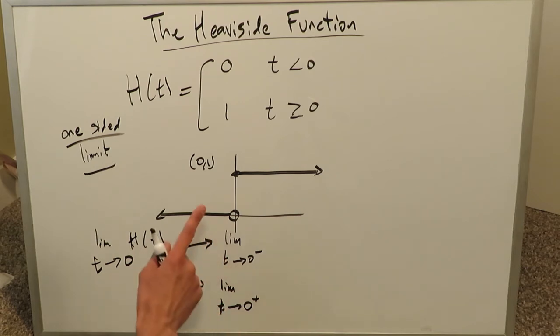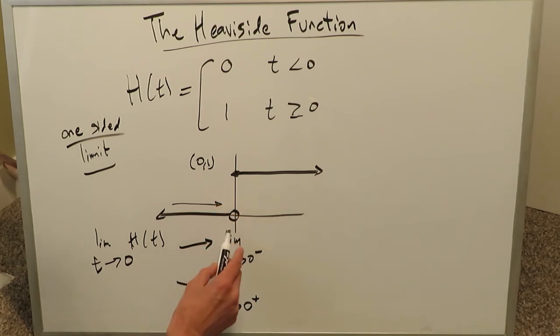When you look at this function here from the left, you're approaching the zero here from the left side. What happens to your value? It actually falls and becomes zero. Your function approaches zero.